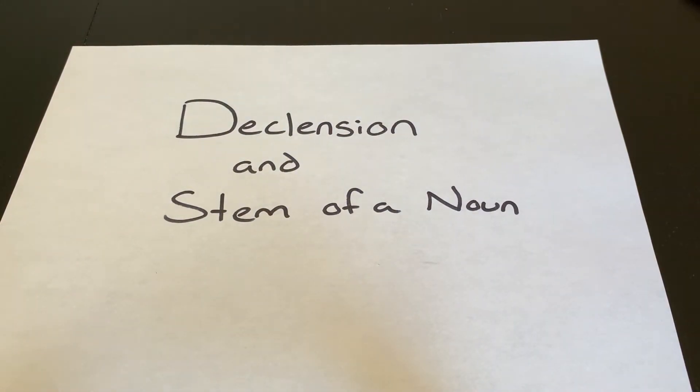In this video I'm going to explain how you can identify the declension and stem of a noun when you are looking at the dictionary entry for the word.